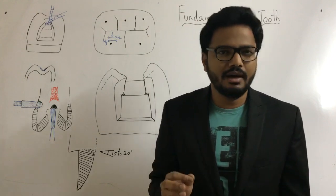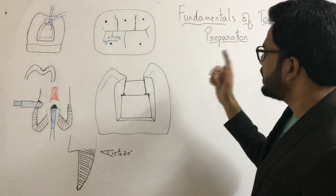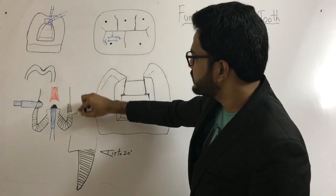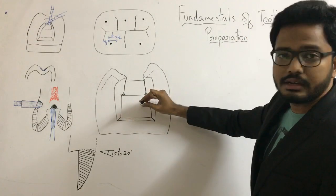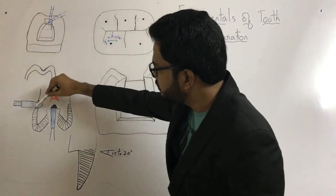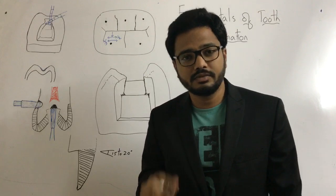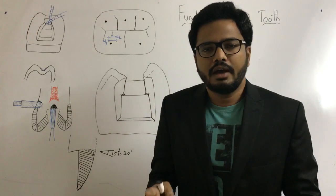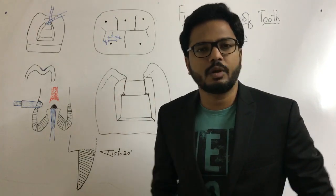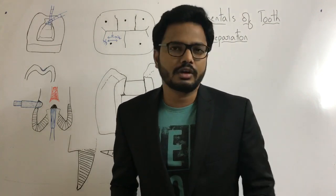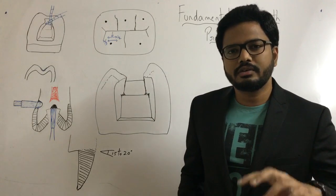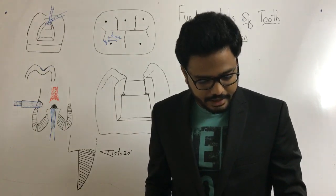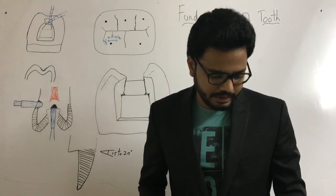Axial depth must be 0.5 mm into dentin. The reason we place cavity walls into dentin is that dentin has the property of resiliency — shock absorption, similar to the shock absorption of a vehicle. That's why internal walls are placed into dentin. Axial depth has to be uniform for amalgam, and need not be uniform for composites.